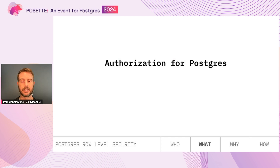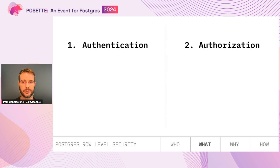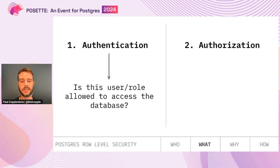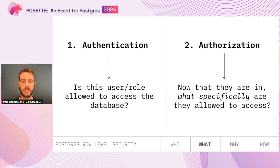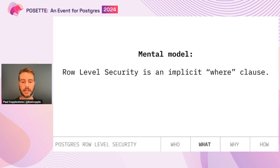You can think of RLS as authorization for Postgres. Auth comes in two flavors: authentication and authorization. Authentication tries to answer the question: is a user or role allowed to access a database? And then authorization answers: now that they're in, what specifically are they allowed to access? With Postgres you can write SQL functions that return a true or false around certain sets of data that a user can access.